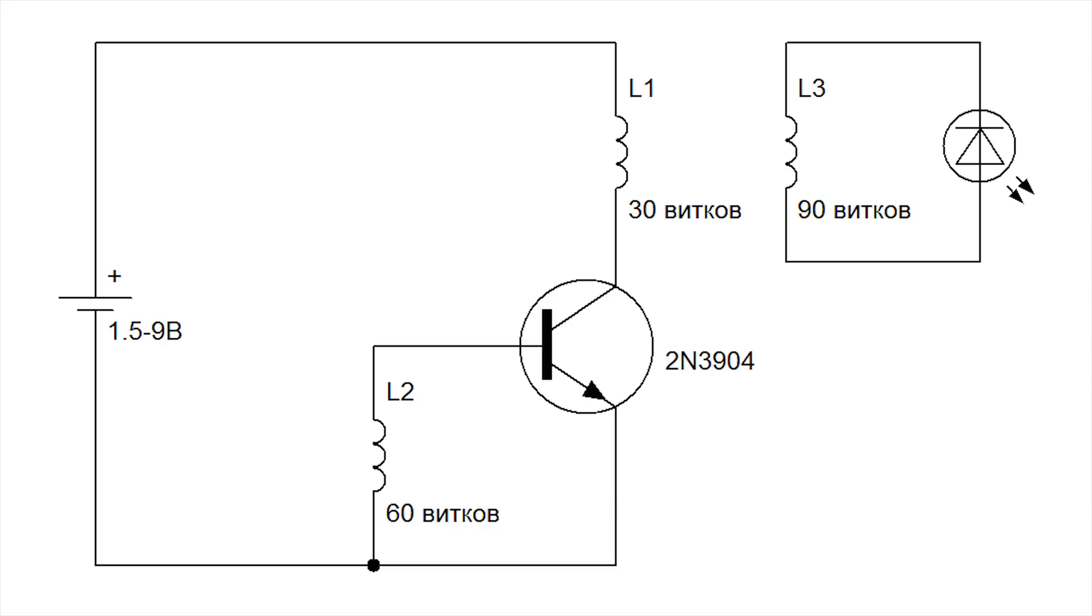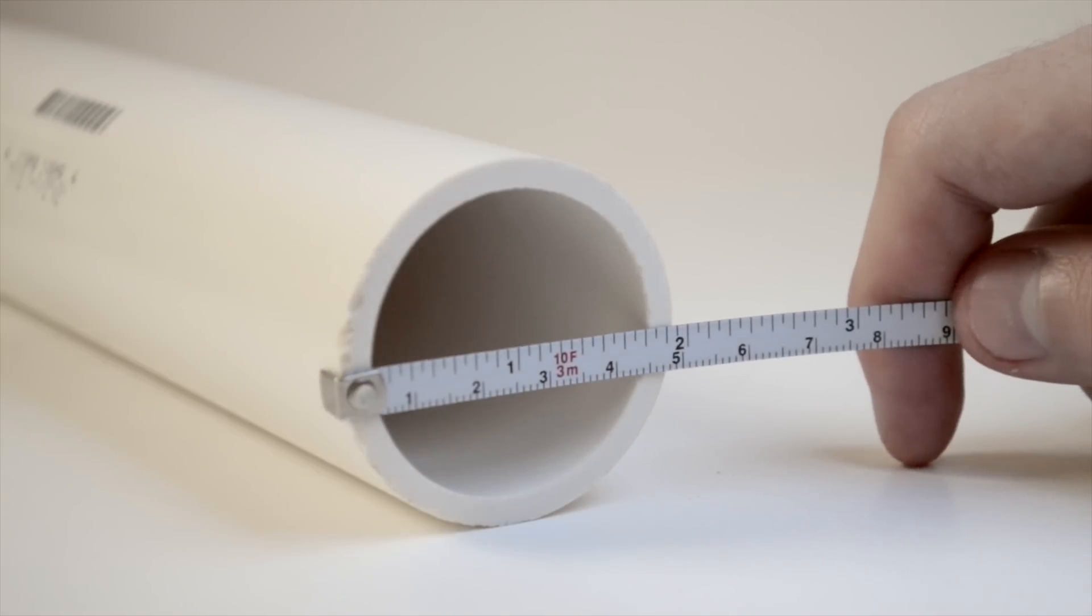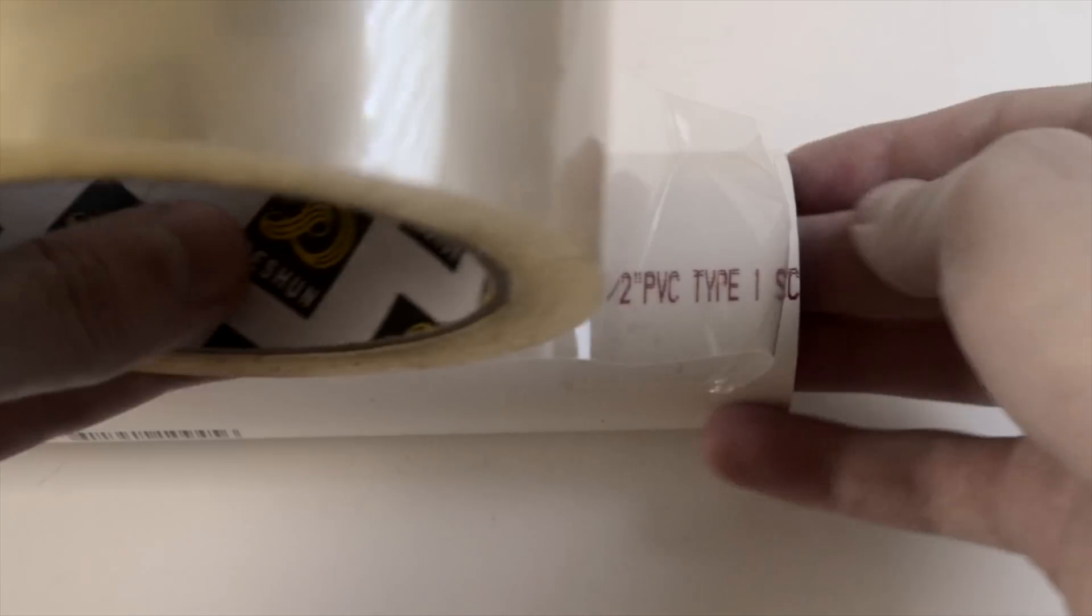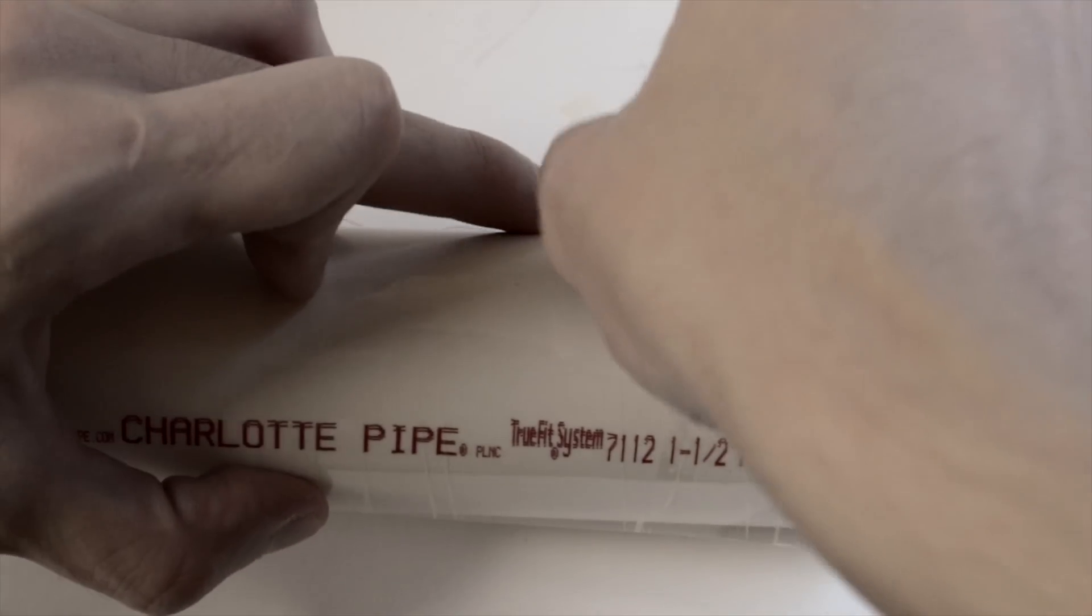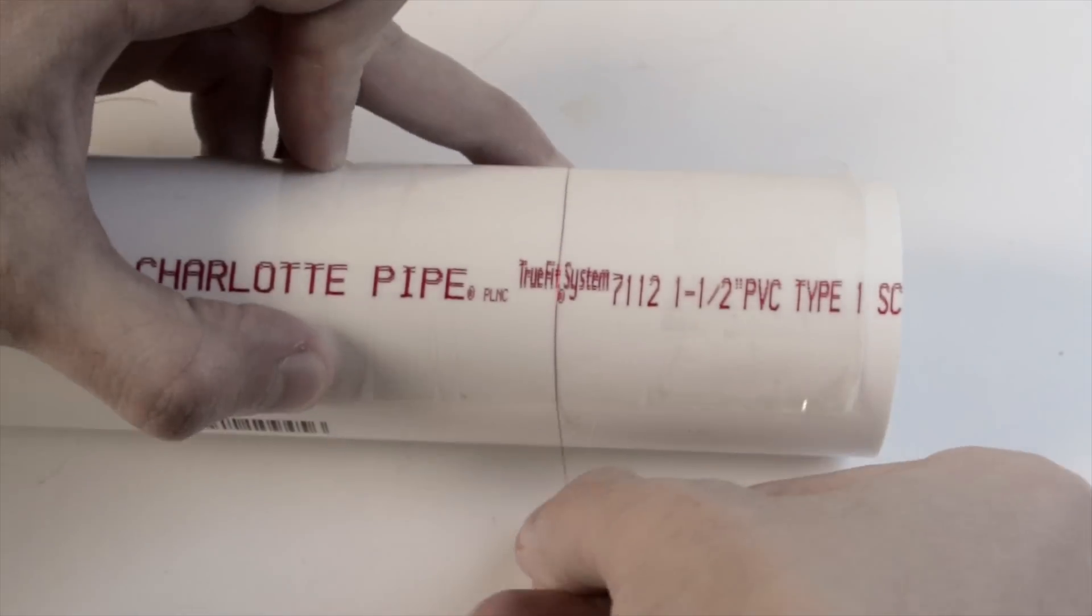First we need to make 3 coils, 30, 60 and 90 turns each. For a temporary frame, I used 1.5 inch PVC pipe. Place a piece of tape sticky side out, glue one end of the wire, and wind 30 turns.